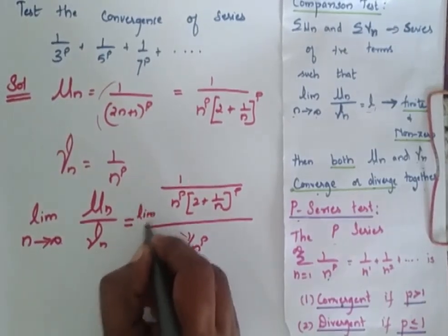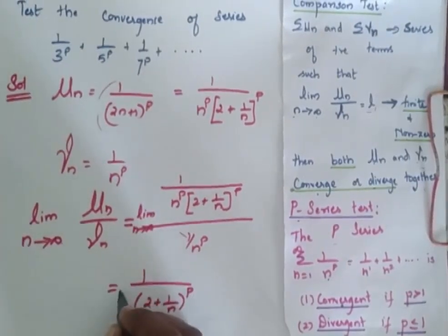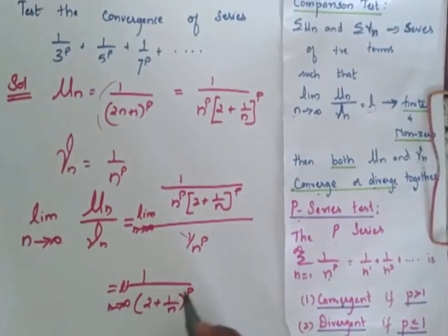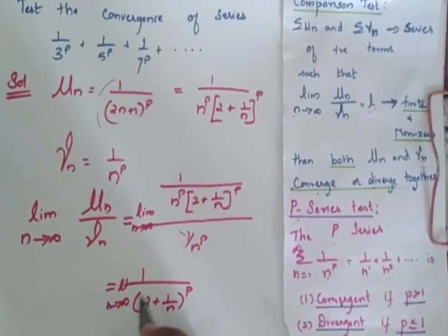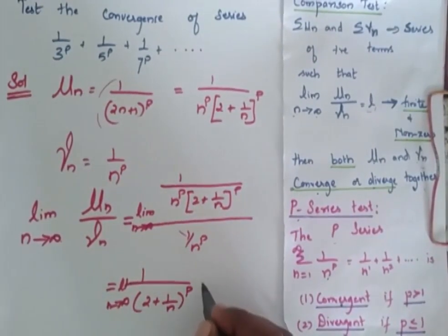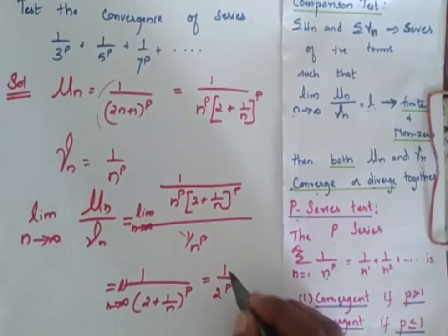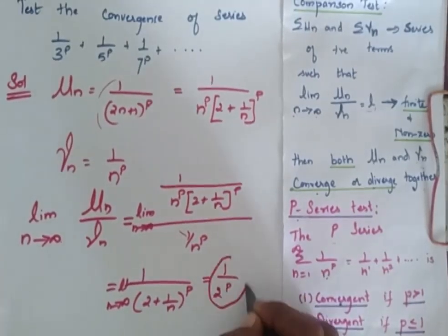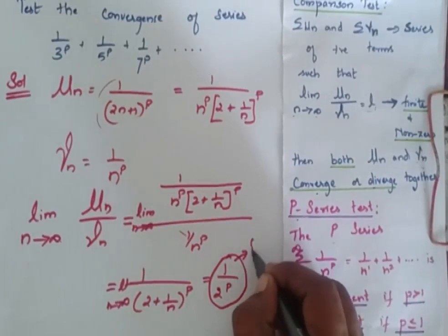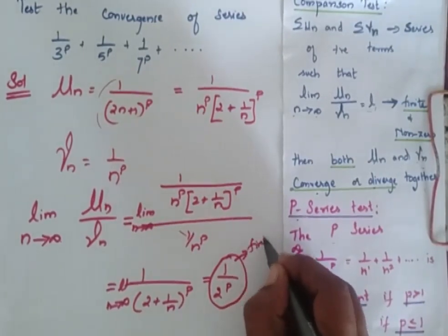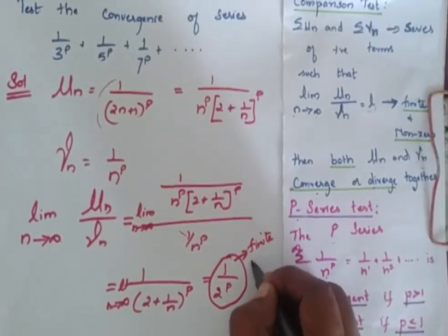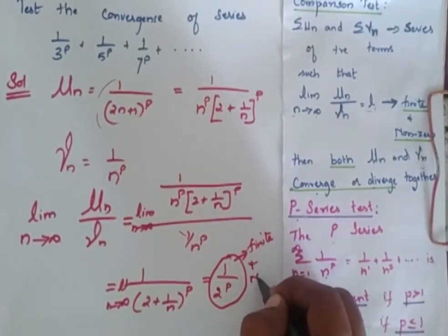Now taking the limit N tends to infinity and substituting, I will get this as 1 by 2 power P. So this value 1 by 2 power P is finite and non-zero.